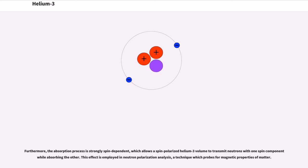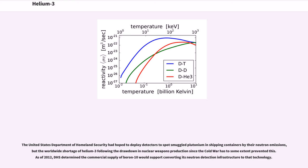Furthermore, the absorption process is strongly spin-dependent, which allows a spin-polarized helium-3 volume to transmit neutrons with one spin component while absorbing the other. This effect is employed in neutron polarization analysis, a technique which probes for magnetic properties of matter. The United States Department of Homeland Security had hoped to deploy detectors to spot smuggled plutonium in shipping containers by their neutron emissions, but the worldwide shortage of helium-3 following the drawdown in nuclear weapons production since the Cold War has to some extent prevented this. As of 2012, DHS determined the commercial supply of boron-10 would support converting its neutron detection infrastructure to that technology.